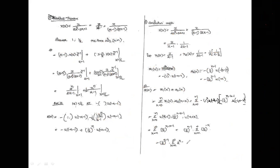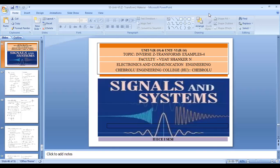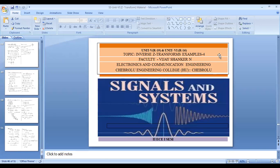With this we complete the Z-transformation unit. The changes depend upon μ(-k-1) and μ(-n+k) ranges.